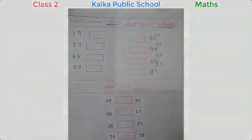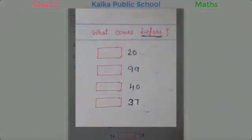Now let us move to before. Before 20? 19. Before 99? It would be 98. Before 40? Yes, it would be 39. And before 37? Correct, 36.